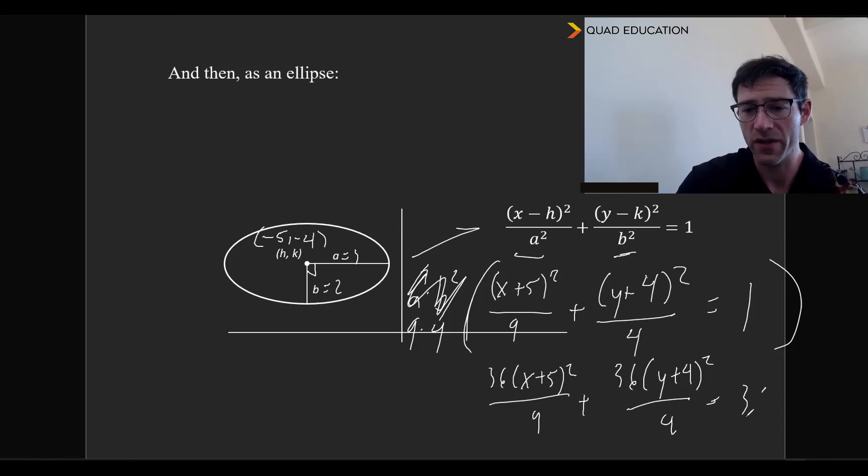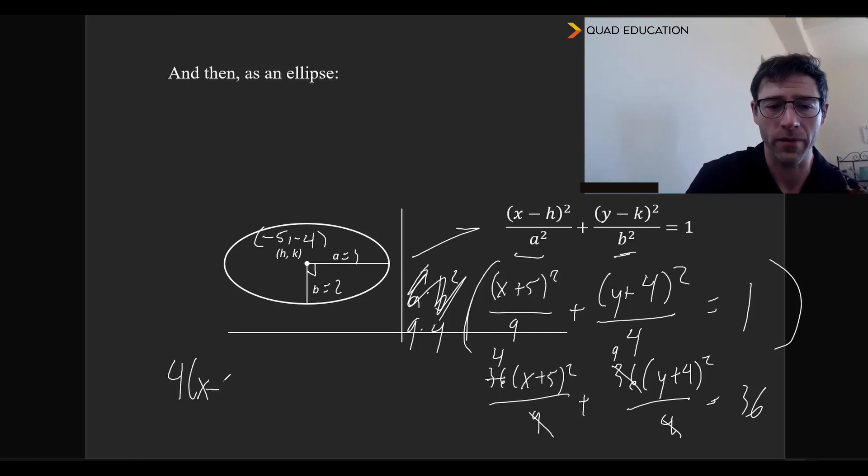And since we have 36 over 9 here, we can actually cancel that out and say this is 4. And we can cancel that 36 out here and say that this is 9. So that's going to leave us with 4(x+5)² + 9(y+4)² = 36.